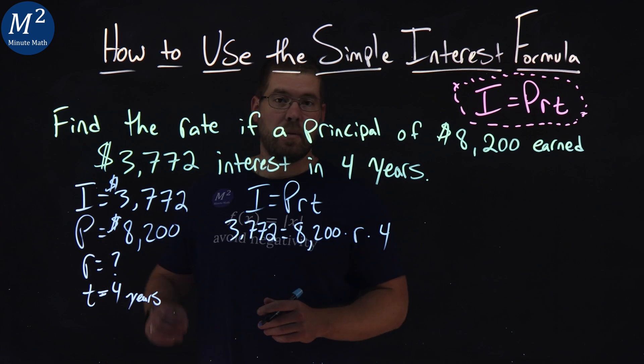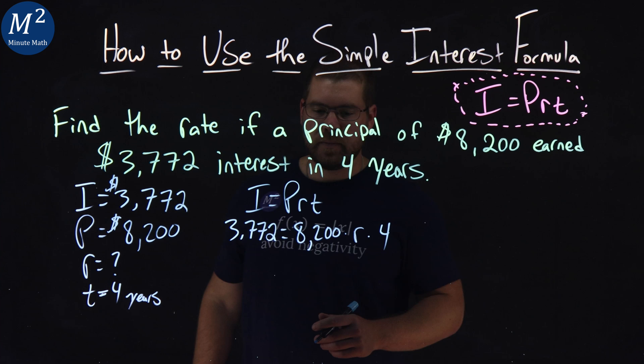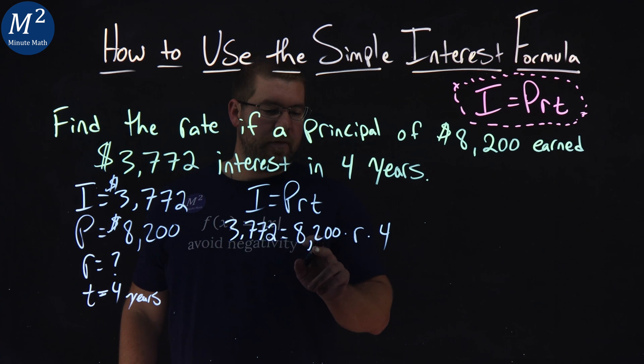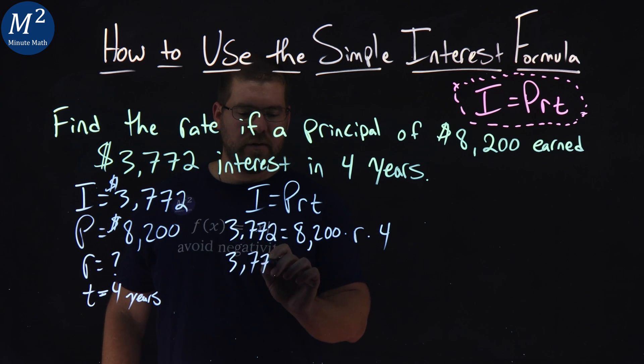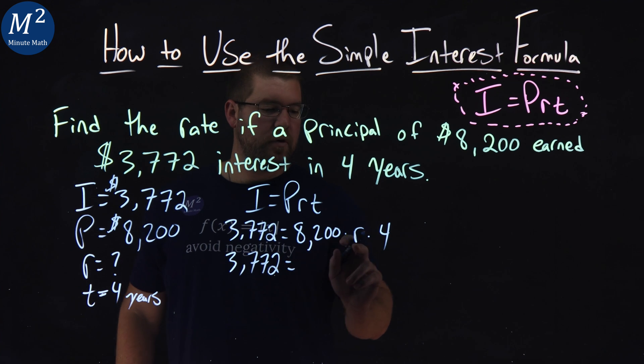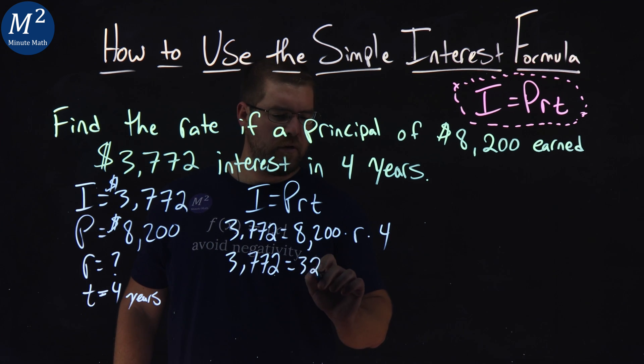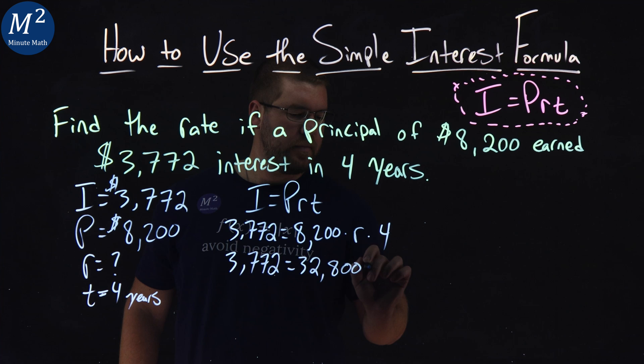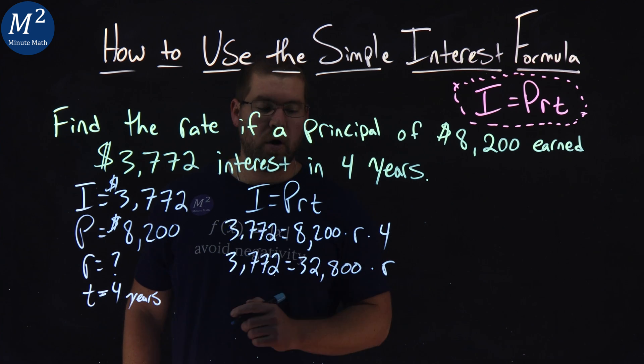Now we've got to solve for R. Let's multiply. $8,200 times four, so we have $3,772 on the left. $8,200 times four is $32,800 times our interest rate, R.